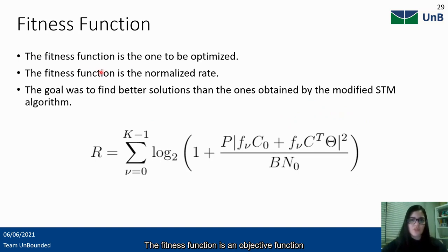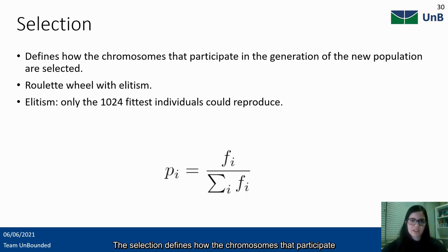The fitness function is an objective function used to guide the genetic algorithm simulations towards an optimal design solution. In this work, the fitness function is the normalized rate and the goal was to improve the results achieved using the modified STM algorithm. The selection defines how the chromosomes that participate in the generation of the new population are selected. In this work, one of the couples is formed by the fittest individuals and the others are chosen by the roulette wheel of elitism. The elitism was applied to the roulette by determining that only the 1024 fittest individuals could reproduce.